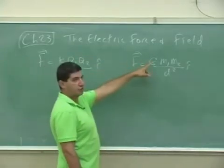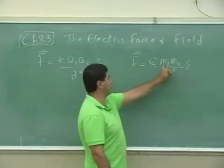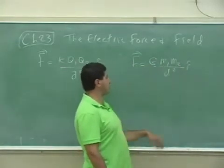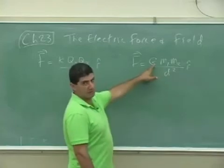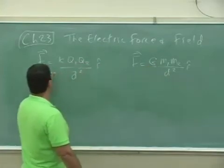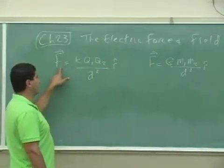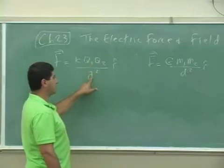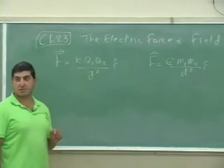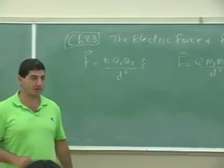The gravitational force between two objects is proportional to the product of the two masses, the distance between them squared, and some constant called the universal constant of gravity. Well, the electrical force between two objects is proportional to the product of the charges divided by the distance squared times the sum constant, the electrical constant.